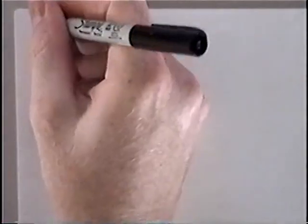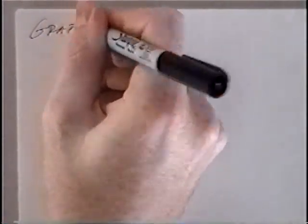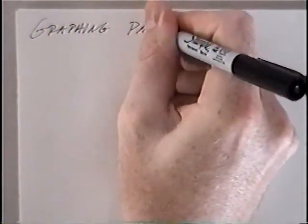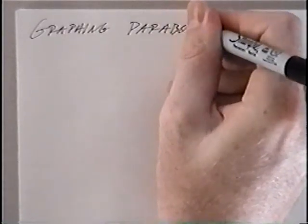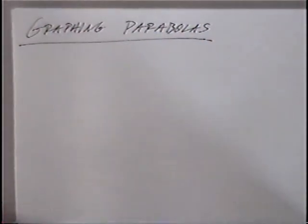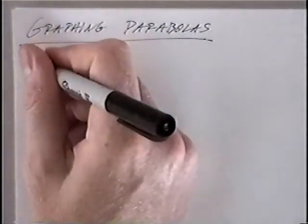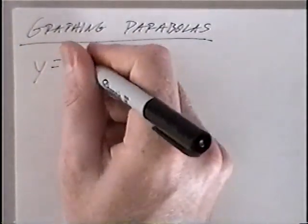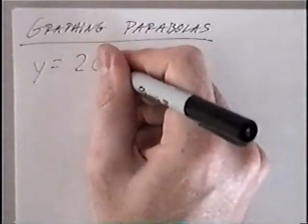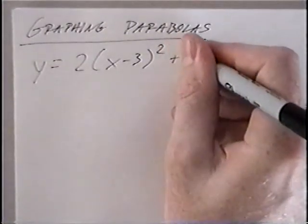The title of the first section is graphing parabolas. The first equation is y equals 2, open parenthesis, x minus 3, squared, plus 4.